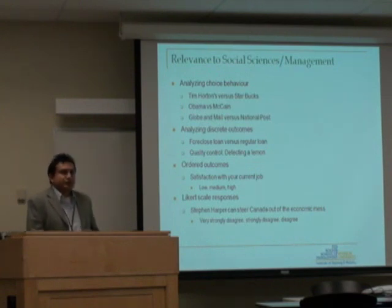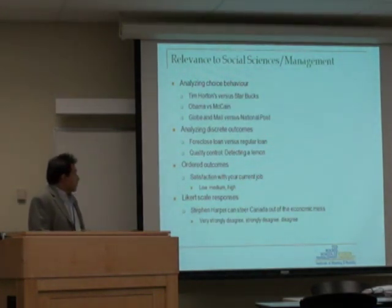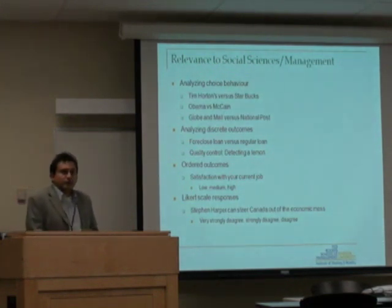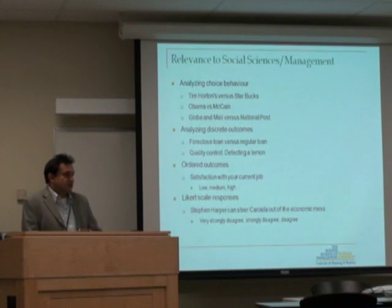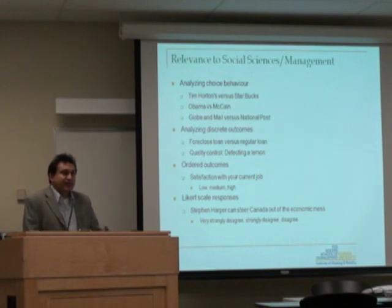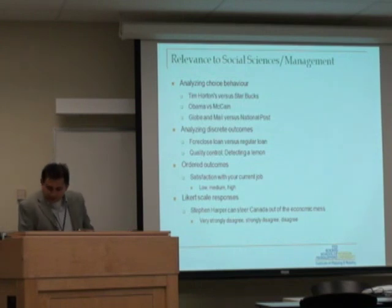What are these discrete outcomes in management and finance? For example, what are the odds that a loan you are extending could result in a foreclosure versus being a regular loan — that is the rate of default. You measure default risk and sometimes look at default as either 0 or 1. In quality control, you're trying to detect a defective product at the end of a manufacturing plant — a car or a computer. You check whether the final product meets the standard or not. That would be categorical data: 1 for pass, 0 otherwise.